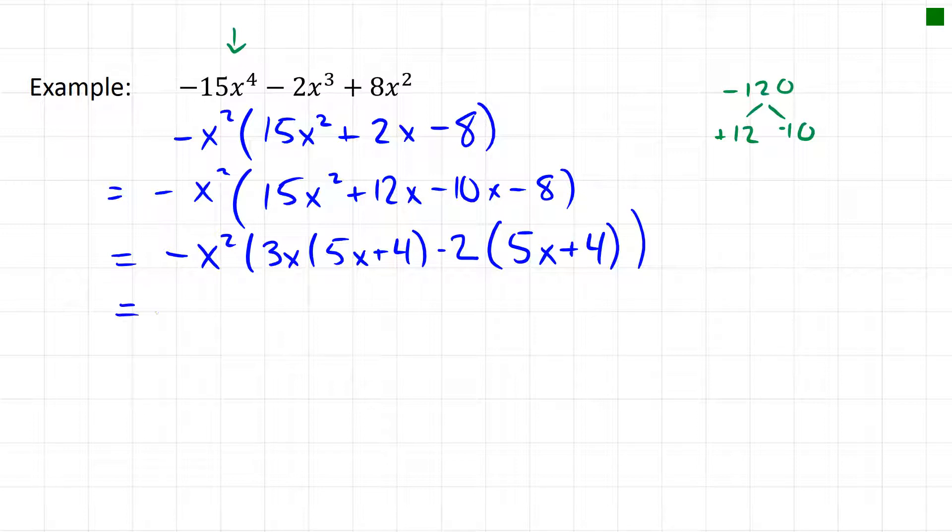So there's that factor out front, and then I have 5x plus 4 and 3x minus 2. There's my factored trinomial.